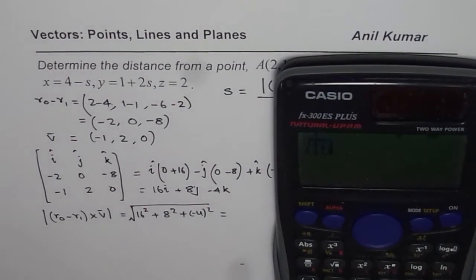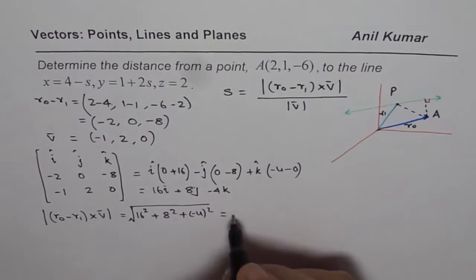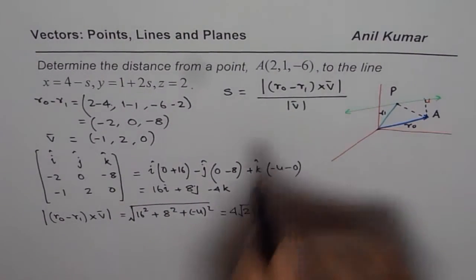Square root of 16 square plus 8 square plus 4 will also become positive, equals to 4√21, 4 square root of 21. So that is the numerator.